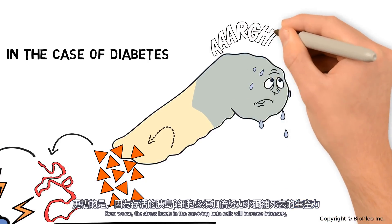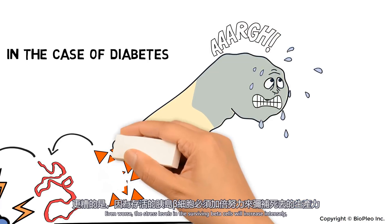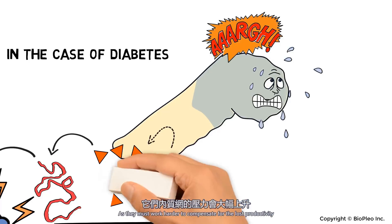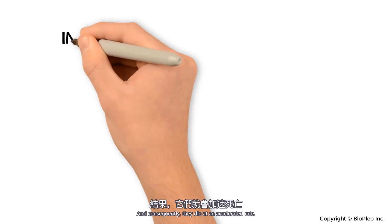Even worse, the stress levels in the surviving beta cells will increase intensely, as they must work harder to compensate for the lost productivity, and consequently, they die at an accelerated rate.